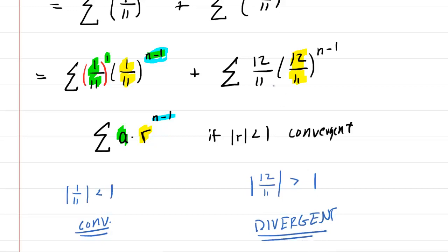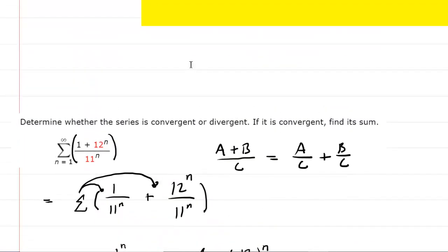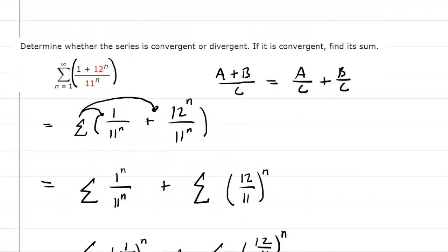And because the second series diverges, it doesn't really matter that the first series converges because this will take precedent. Basically, if we try to add up this series, it would go to infinity and infinity would certainly be larger than any finite result from the first convergent series. So in short, because the second series diverges, we're done with this problem. The overall original series is divergent.